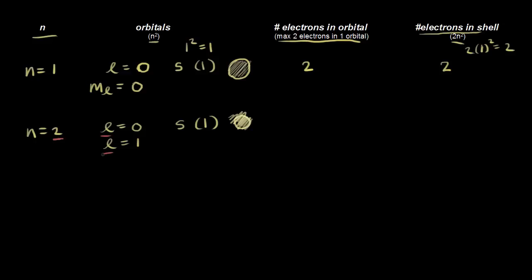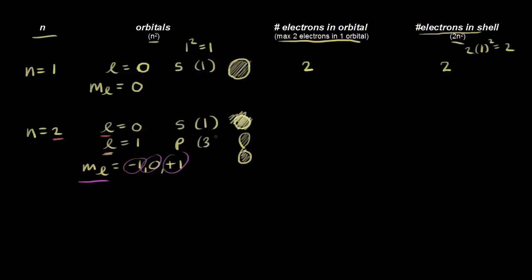When l is equal to one, what are the allowed values for the magnetic quantum number? The magnetic quantum number goes from negative l to positive l, so from negative one, including zero, to positive one — three possible values. The magnetic quantum number tells us orientation, so there are three different orientations. l is equal to one refers to a p orbital, shaped like a dumbbell. We have three different p orbitals in the second energy level: one along the x-axis, one along the y, and one along the z.